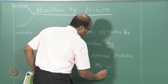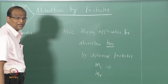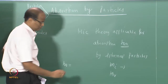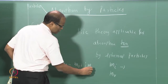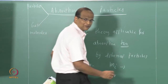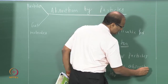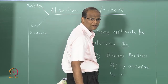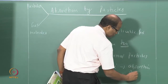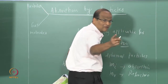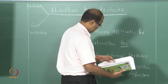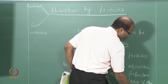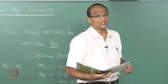The complex refractive index M equals n + iK, where i is the imaginary part related to absorption and n is the real refractive index of the medium, which denotes scattering. We looked at a particular case of K equal to 0 and n equal to 1.5 — I gave you a plot of scattering efficiency yesterday.